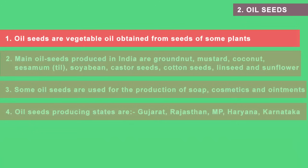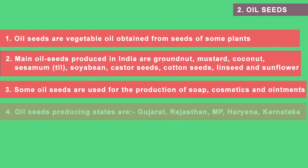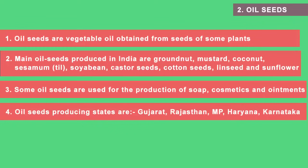The next food crop is oilseeds — vegetable oil obtained from the seeds of plants. You may have heard of sunflower oil, sesame oil or olive oil used in the kitchen. Main oilseeds produced in India are groundnut, mustard, coconut, soybean, castor seeds, cotton seeds, linseed and sunflower. Most are edible and used as cooking mediums, and oil is also used for production of soap, cosmetics and ointments. Major producing states are Gujarat, Rajasthan, Madhya Pradesh, Haryana and Karnataka.